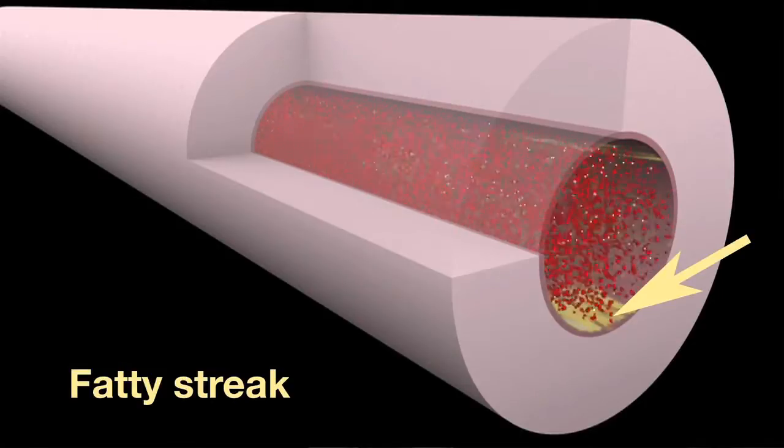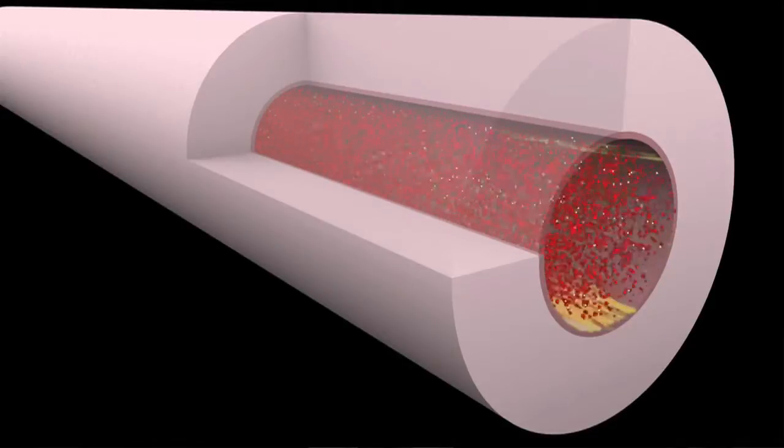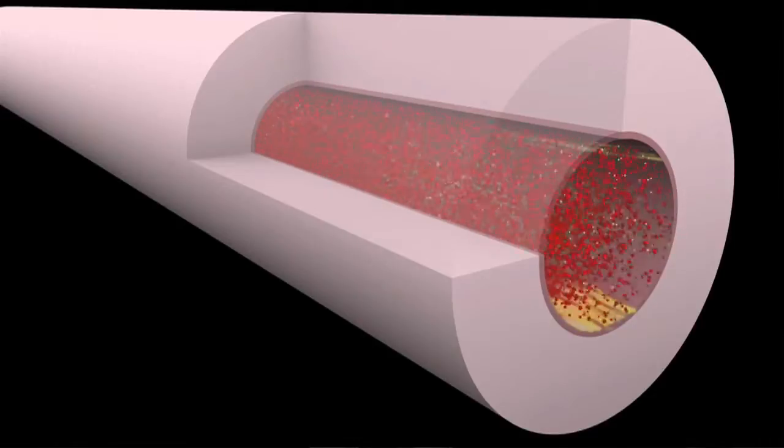The more cholesterol in the blood, the more likely that fatty streaks will form. In people who eat high-fat diets, fatty streaks may form as early as age 20.